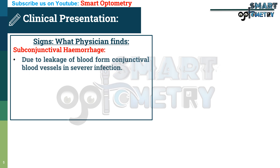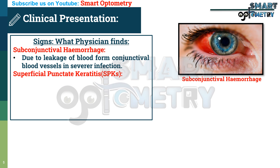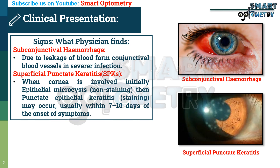Subconjunctival hemorrhage, due to leakage of blood from conjunctival blood vessels in severe infection. Superficial punctate keratitis — when the cornea is involved, initially there are epithelial microcysts that are non-staining, then punctate epithelial keratitis may occur, usually 7 to 10 days after the onset of symptoms.